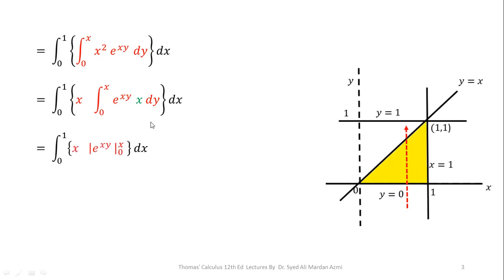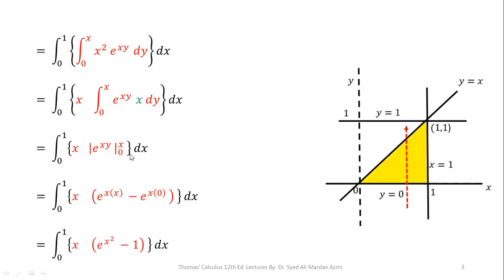The integration of e raised to power xy times x with respect to y is e raised to power xy, evaluated for the limits 0 to x. In the next step, we will apply the fundamental theorem of calculus to evaluate the limits, meaning upper limit minus lower limit. For the upper limit, we replace y with x, and for the lower limit, we replace y with 0. After simplifying, this completes the evaluation of the inner integral.